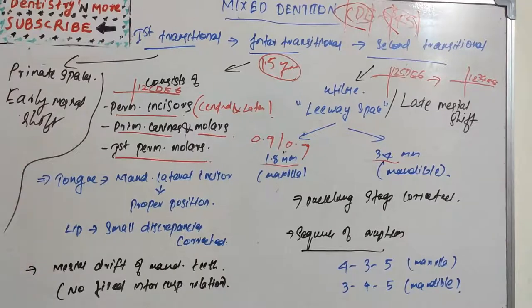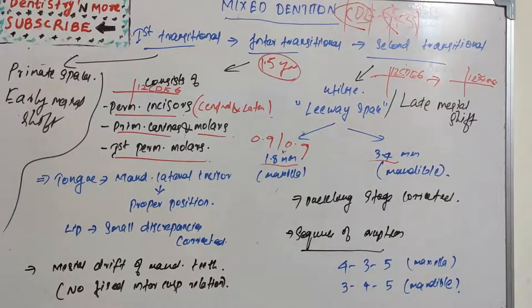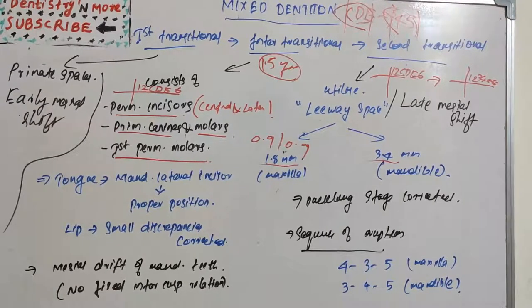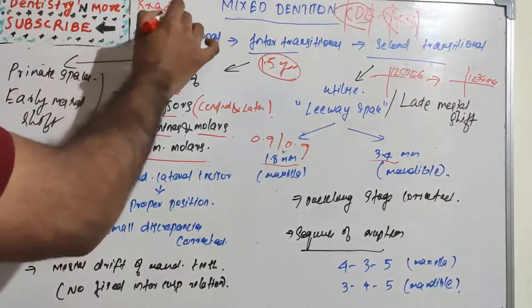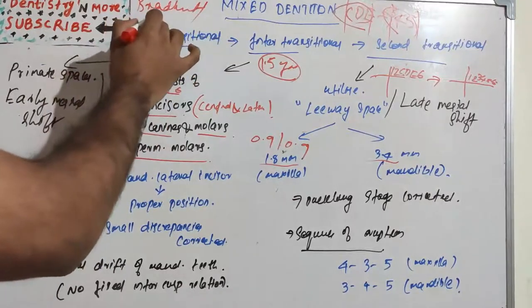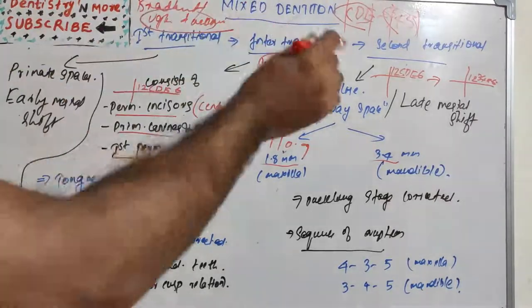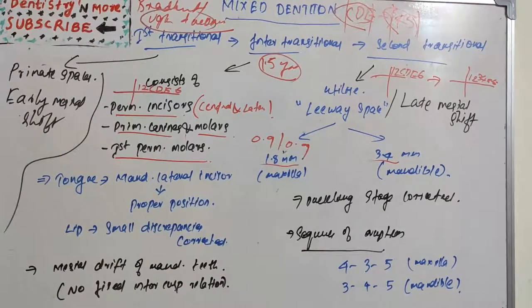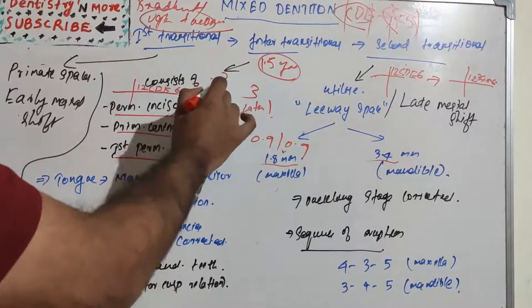And now we have only permanent teeth, so we are moving to the permanent dentition phase. There are many features which are getting corrected in second transitional phase. The main one is the ugly duckling stage - we have seen the Broadbent phenomenon or the ugly duckling stage.